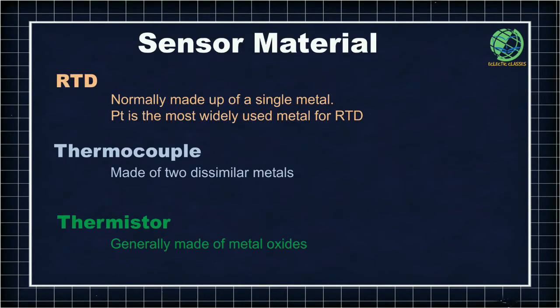In terms of sensor material, RTDs are normally made of a single metal, and platinum is the most widely used metal for RTD construction. The PT-100 is the most widely used RTD in industry. Thermocouples are made of two dissimilar metals — a junction of two dissimilar metals is essential for generation of the millivolt signal with temperature change. Thermistors are normally made of metal oxides.